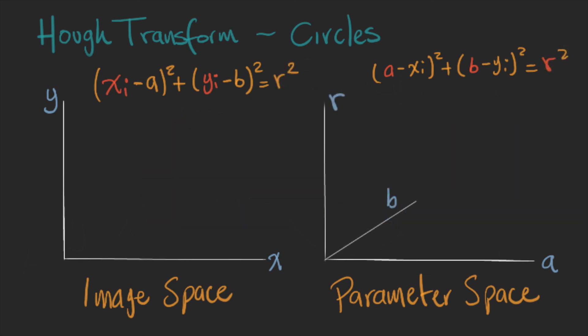and this will create an extra dimension. We have a and b for the position of the circle, and r for the radius.